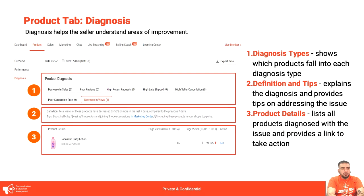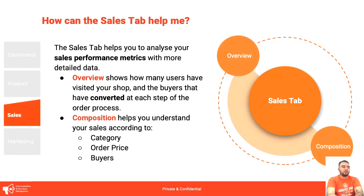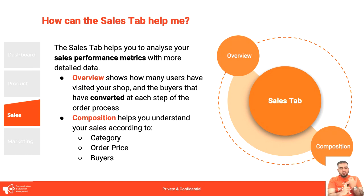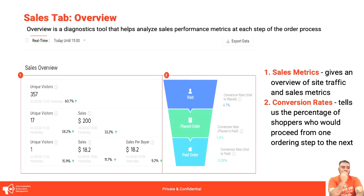In the sales tab, you can analyze your sales performance metrics with more detailed data. It shows an overview of how many users visited your shop and how many buyers converted. The composition section helps you understand your sales according to category, order price, and buyers. The sales tab gives an overview of site traffic, sales metrics, and conversion rates.